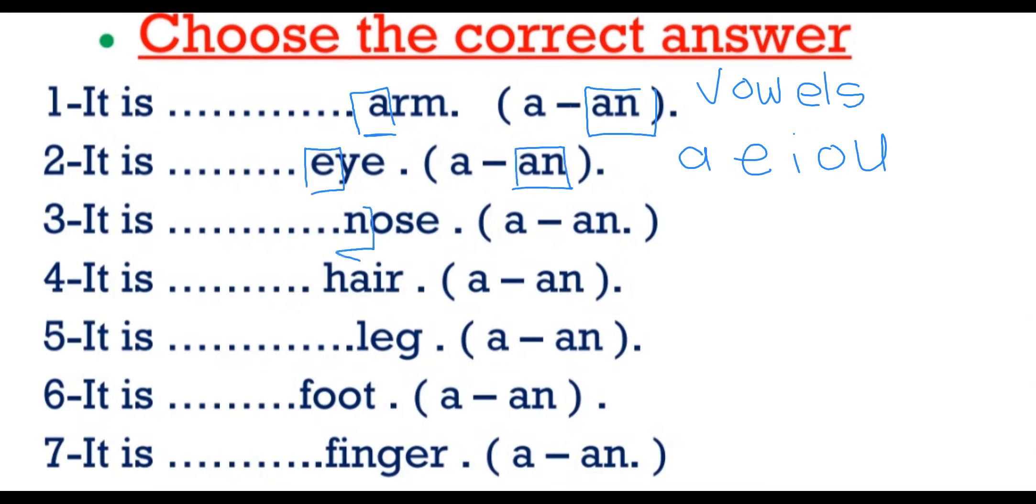Nose. N is a consonant, not vowel. So we use A for consonants.